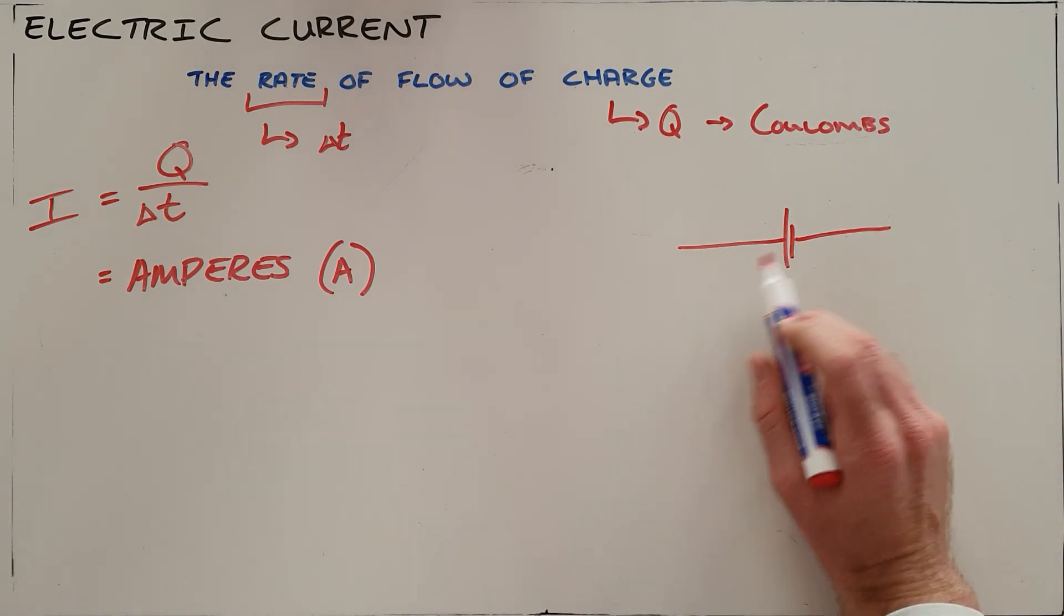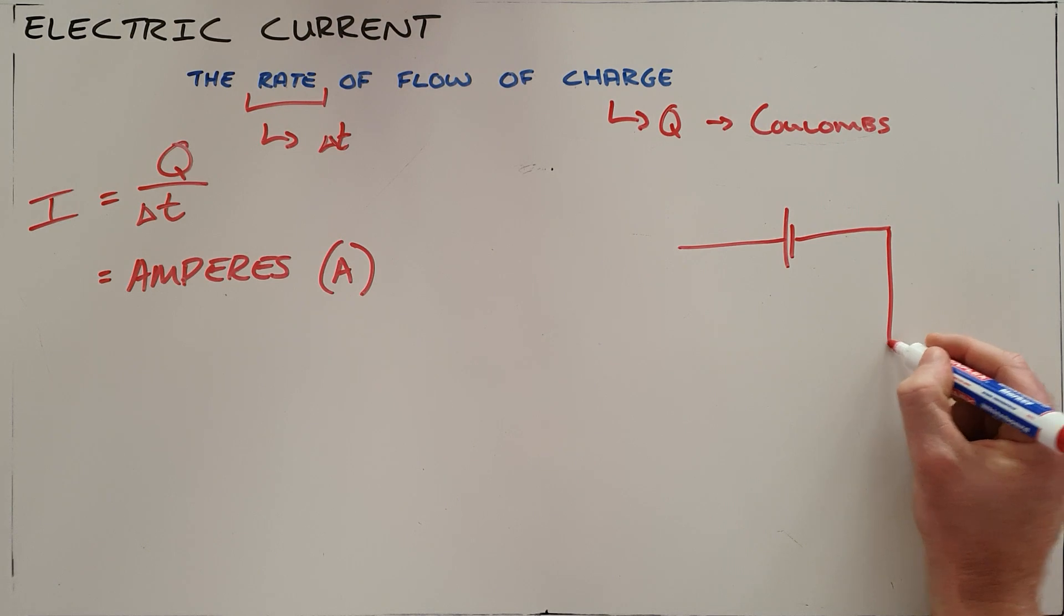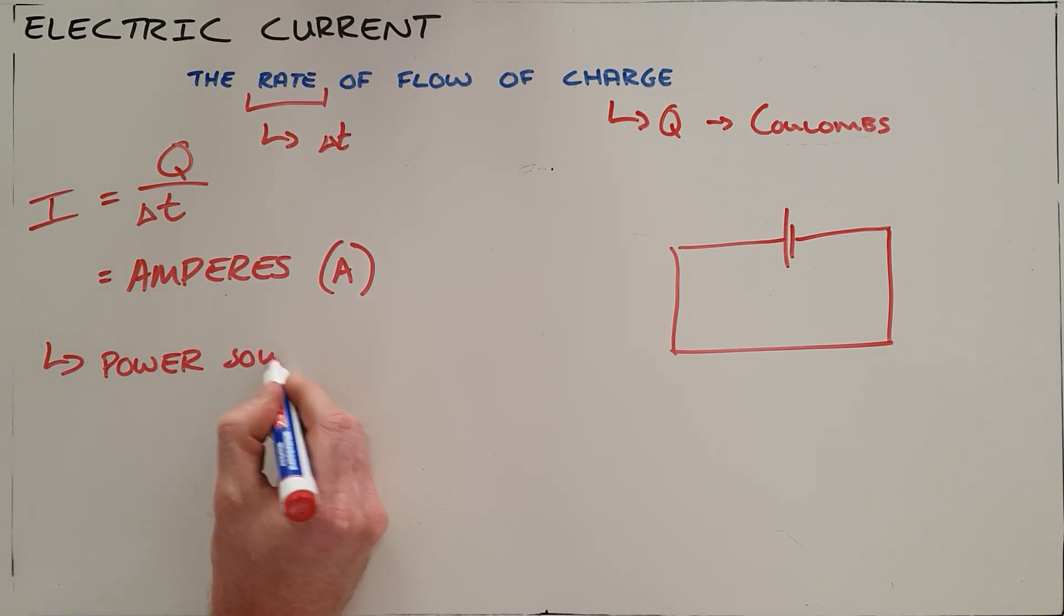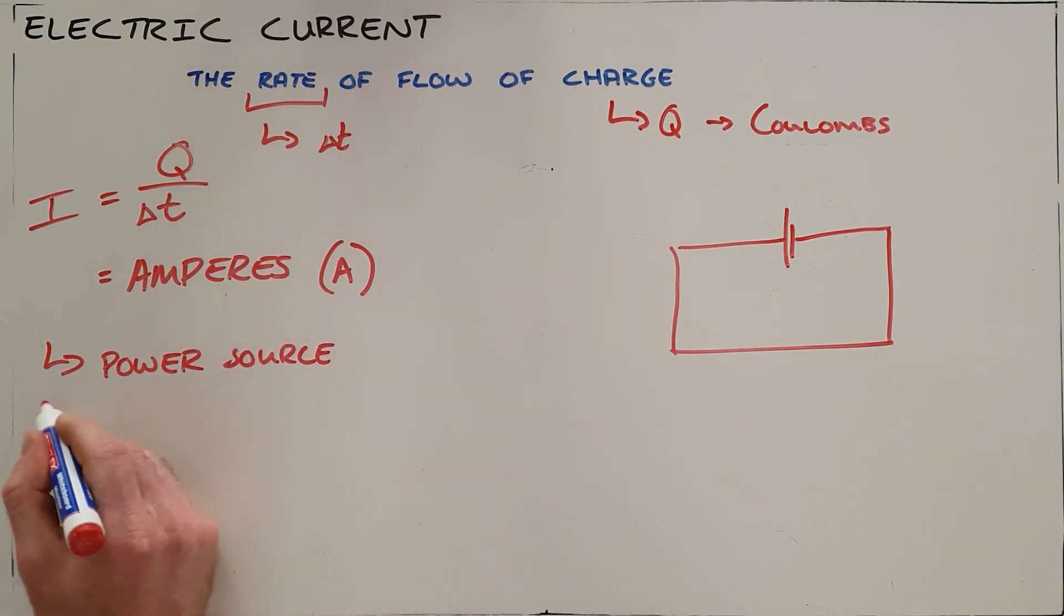The second thing is that a closed circuit is required. So two things required for current to flow: a power source and a closed circuit.